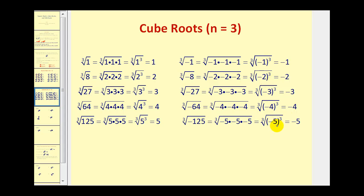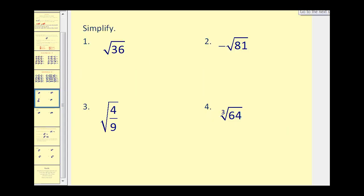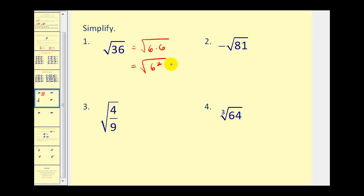Let's take a look at some examples. The square root of 36 — we're trying to find two equal factors for 36, or some number squared that equals 36. Since 36 is equal to 6 times 6, it is equal to 6 squared. The square root of 36 is just 6.